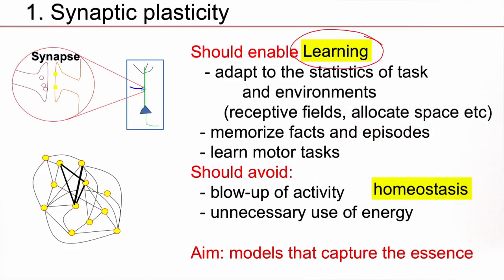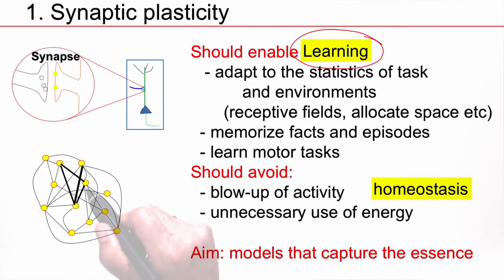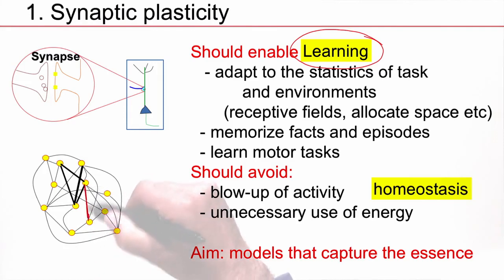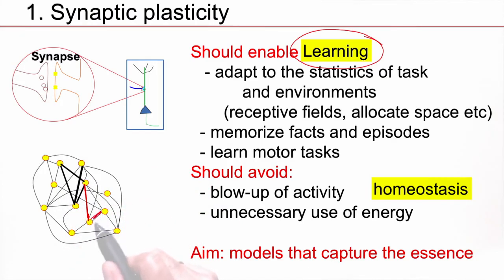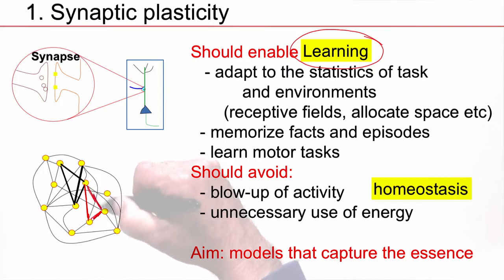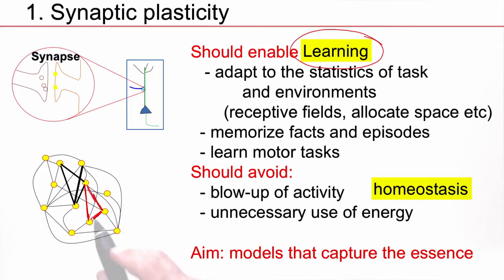Now, at the same time, imagine that a synapse got stronger. The way I draw this is with a stronger link for a stronger synapse. If some synapses got stronger, it's easier for the activity of the brain to circulate between those neurons. This could cascade: other synapses also get stronger, yet other synapses get stronger, so that the whole brain blows up in activity — ending up in an epileptic state, a high-activity state that has no functional meaning.